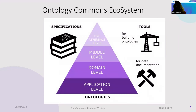The OntoCommons ecosystem consists of a set of ontologies at different levels — from the top level to the application level — along with plenty of tools for building ontologies and for data documentation. Not every ontology is part of this system; we use only state-of-the-art tools and are not developing additional tools from scratch.